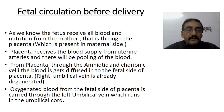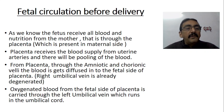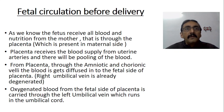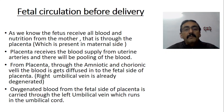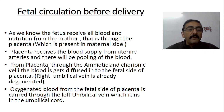Today we will discuss about fetal circulation. The fetus receives all the blood and nutrition from the mother through the placenta, which is present on the maternal side. The placenta receives blood supply from the uterine arteries, and there will be pooling of blood from the uterine arteries. The placenta's maternal side is attached to the uterine surface, so it receives blood through the uterine arteries. From the placenta, through the amniotic and chorionic villi, the blood diffuses into the fetal side of the placenta.